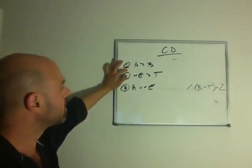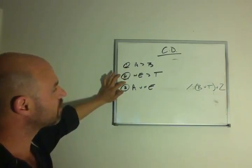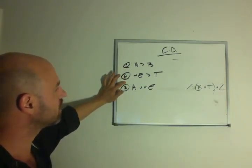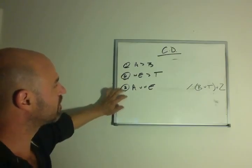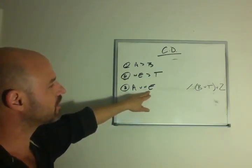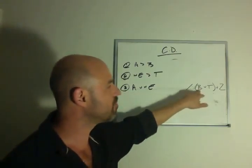Line 1 tells us if A is true, then B is true. Line 2 tells us if not E is the case, then T is the case. Line 3 tells us that either A or not E is the case. Our conclusion is that B or T